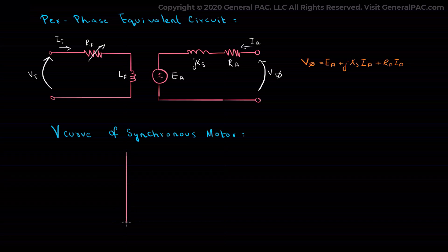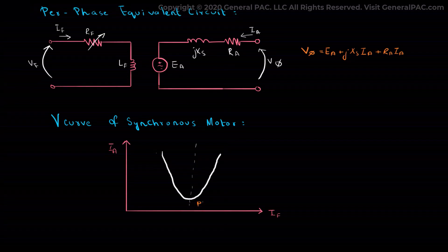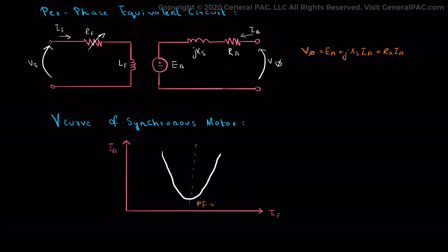This is called a V curve of a synchronous motor. Here we can see a V curve plot of Ia, the armature current, against If, the field current, for each phase. The minimum Ia occurs at the unity power factor, where only real power is supplied to the motor.